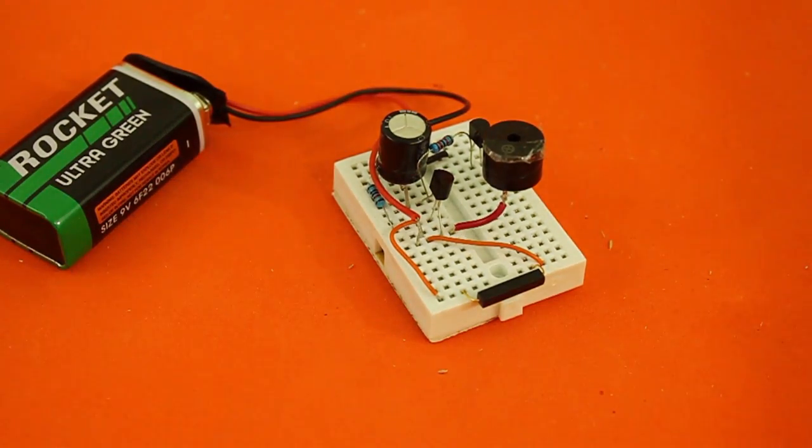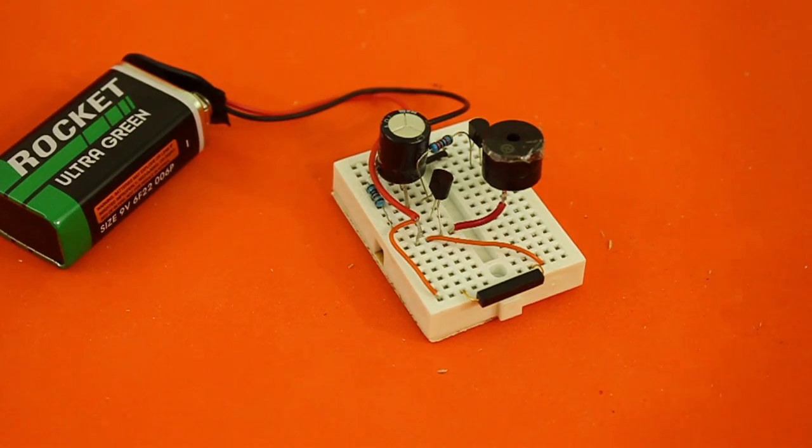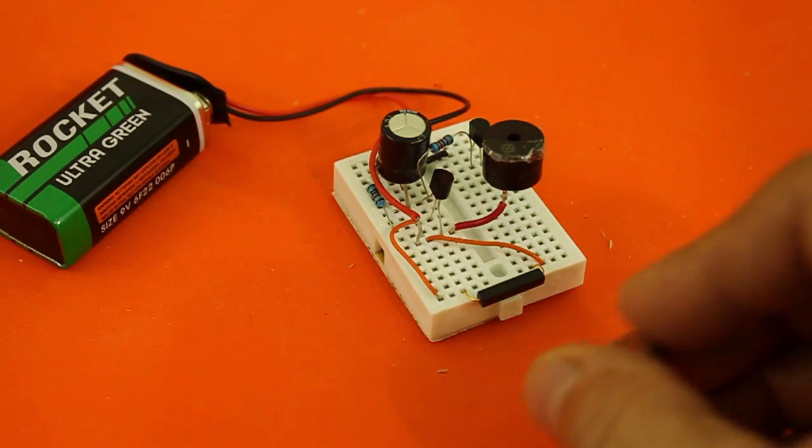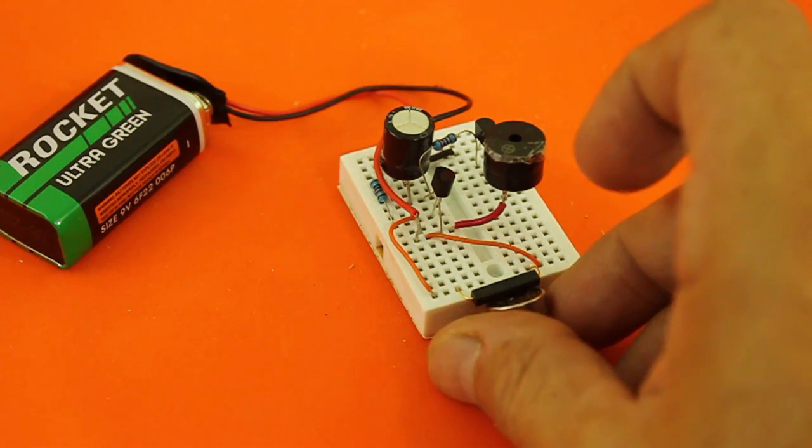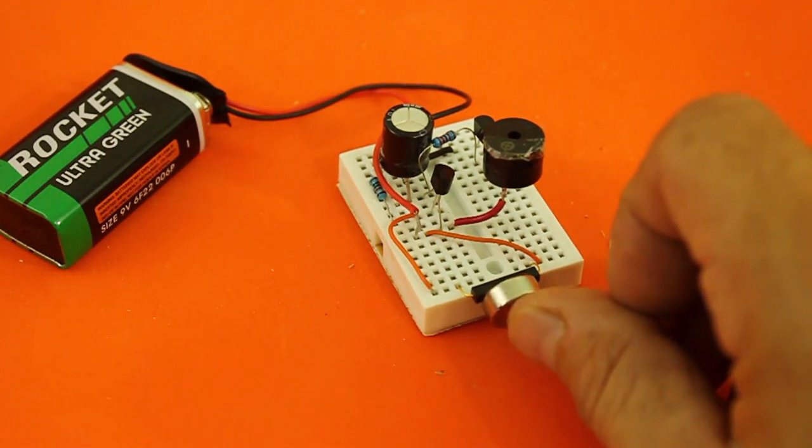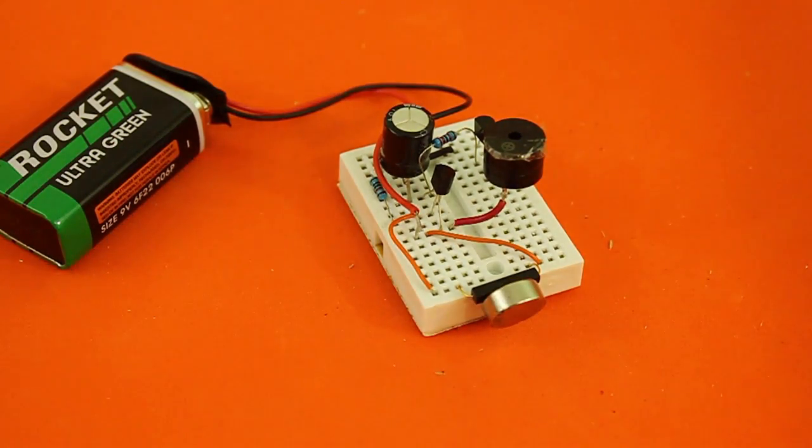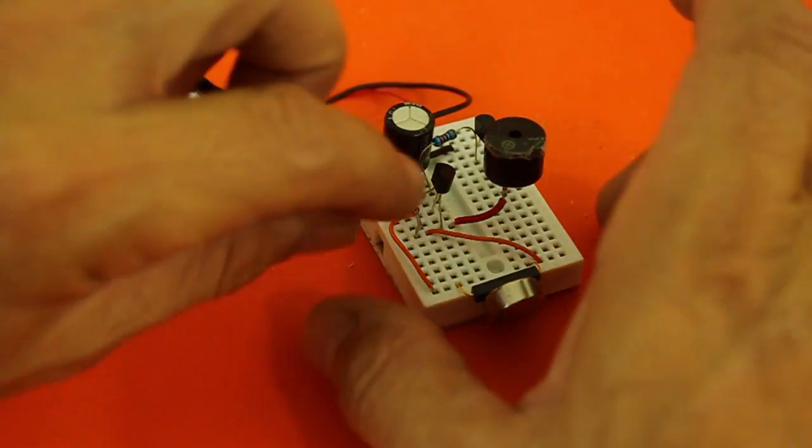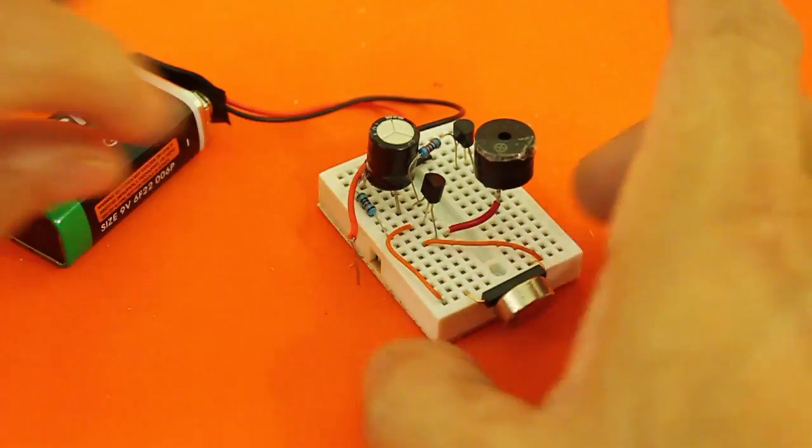The alarm is now on and it will stay on even when we place the magnet again next to the reed switch. We have to wait until the capacitor discharges or we need to disconnect the power.